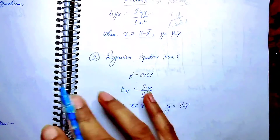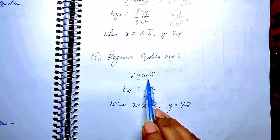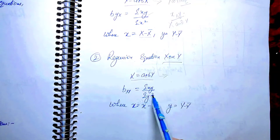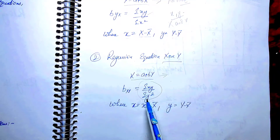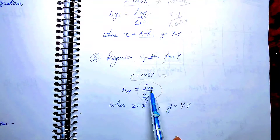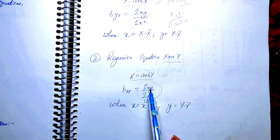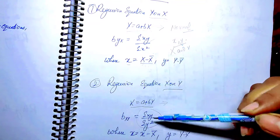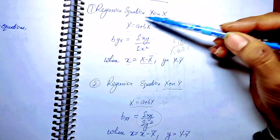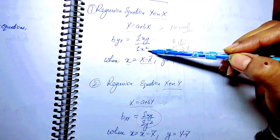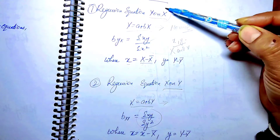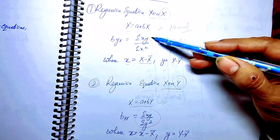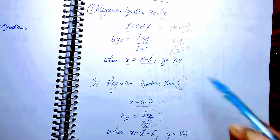For the regression equation x on y, the normal equation is: x = a + by. But the coefficient is slightly different — it is summation(xy) divided by summation(y²). The formula for deviations remains the same: x = X minus X-bar, y = Y minus Y-bar. The formulas are simple: when it is y on x, you take x² because x has the major value; when it is x on y, you take summation(y²). The numerator is the same in both formulas.